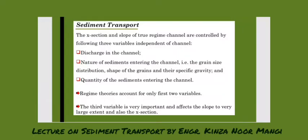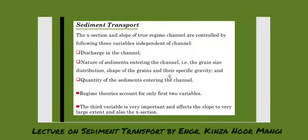In this slide, the first point is that the cross-section and slope of true regime channels are controlled by three independent variables: first, the discharge in the channel; second, the nature of the sediment entering the channel — including grain size distribution, shape of the grain, and specific gravity; and third, the quantity of sediment entering the channel.